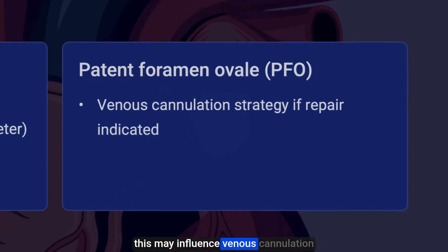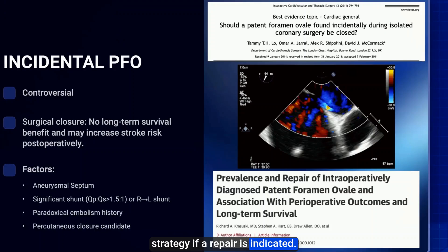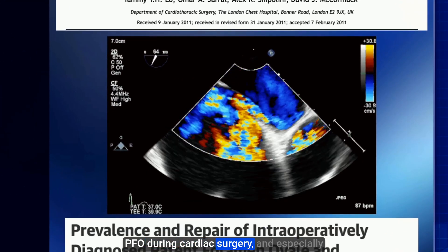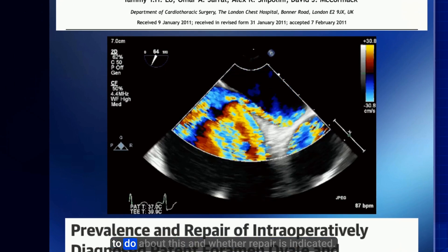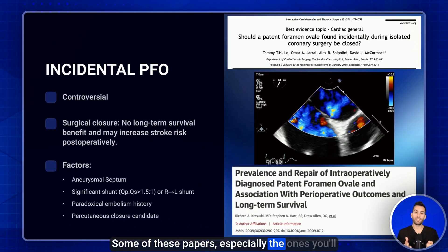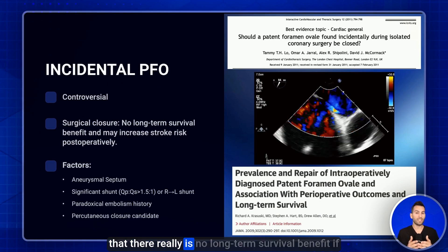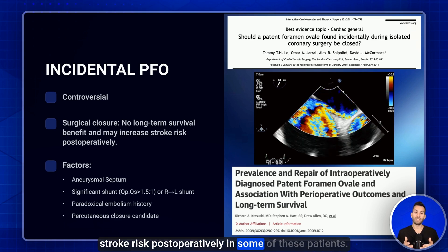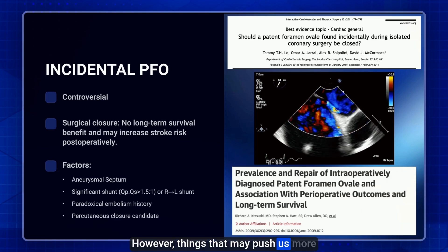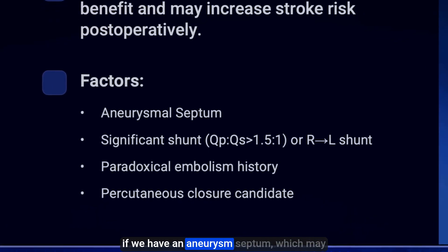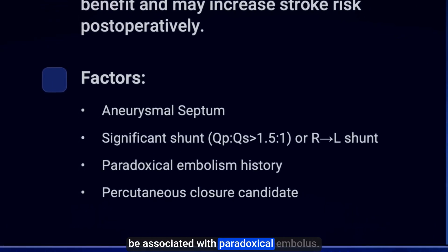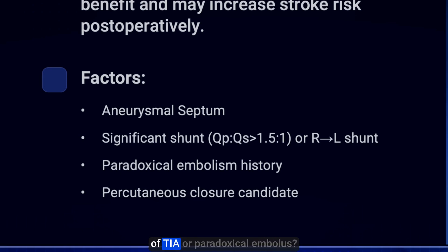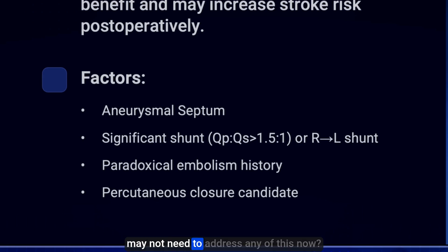We also try to rule out a PFO, as this may influence venous cannulation strategy if repair is indicated. Finding an incidental PFO during CABG surgery is controversial — some papers indicate there is no long-term survival benefit from repair and it may even increase stroke risk postoperatively. However, factors that may favor repair include an aneurysmal septum associated with paradoxical embolus, a significant shunt with Qp:Qs greater than 1.5:1 or a right-to-left shunt, a history of TIA or paradoxical embolus, and whether the patient is eligible for percutaneous closure in the future.